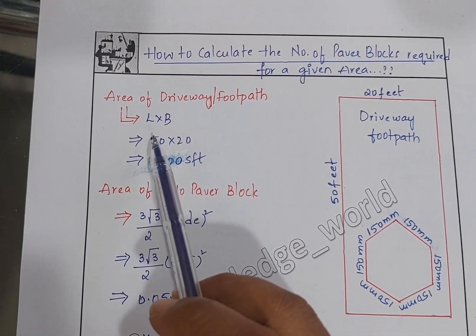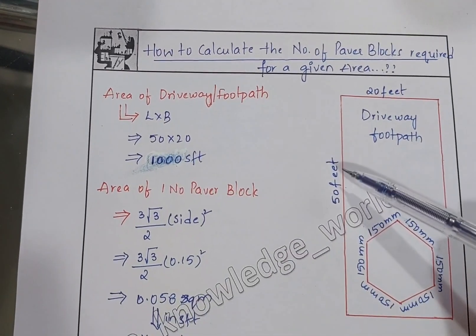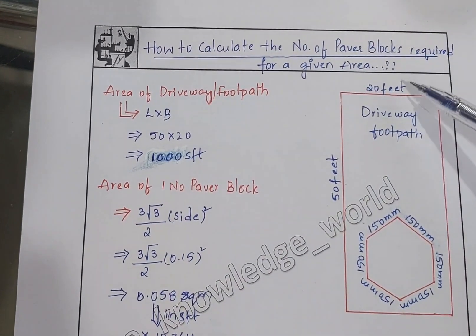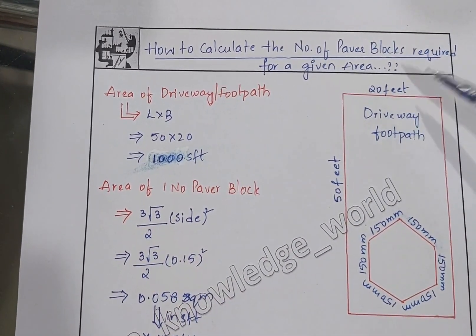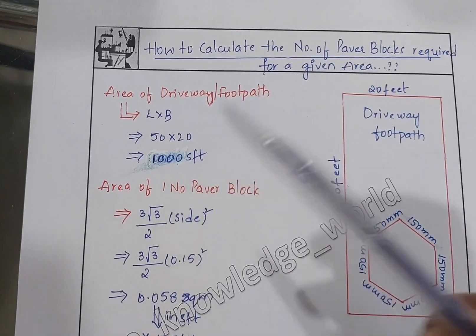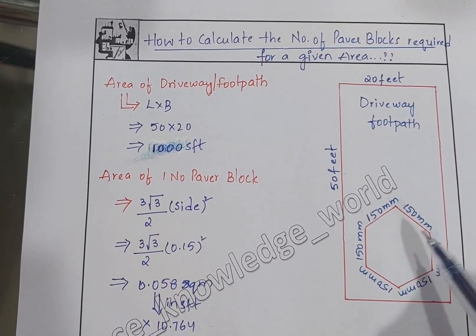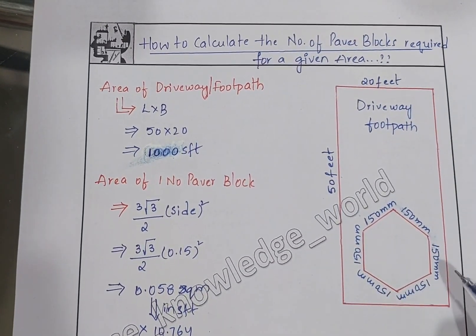Firstly, we will calculate the area of this driveway or footpath. The formula is length into breadth. The length is 50 feet and the width is 20 feet, so 50 into 20 gives us 1000 square feet.